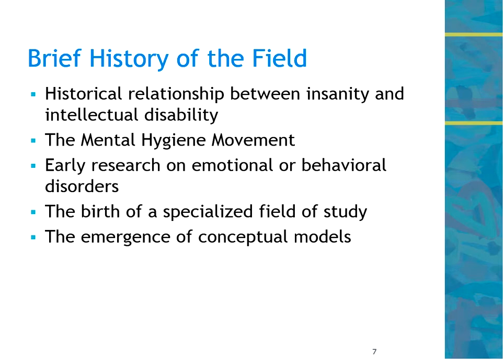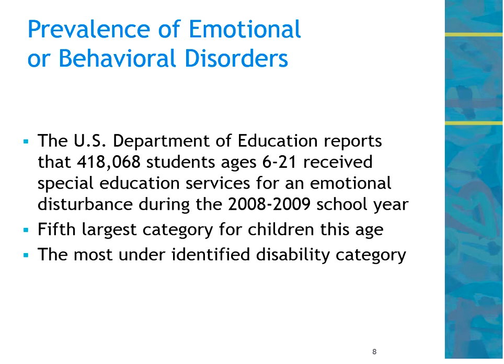So let's look at what the numbers are. These data are about five years old but give a good indication of what we're seeing. Pretty close to half a million students were receiving special education services in school year 2008-2009 because they had a behavioral or emotional disturbance. The fact that this is the fifth largest category is a little misleading because, as it says, it's the most under-identified disability category — we have many more kids who should be categorized this way but haven't been.